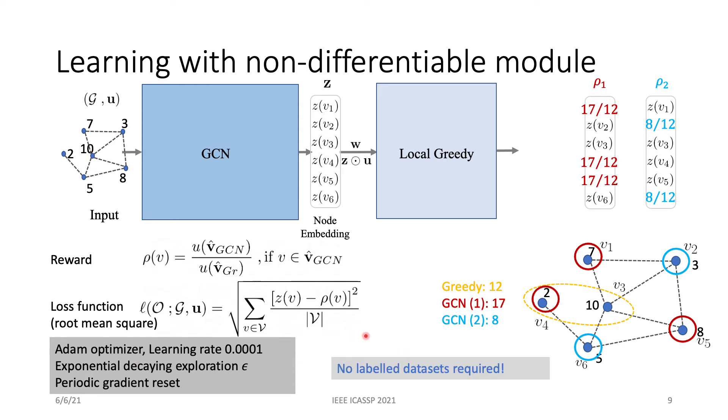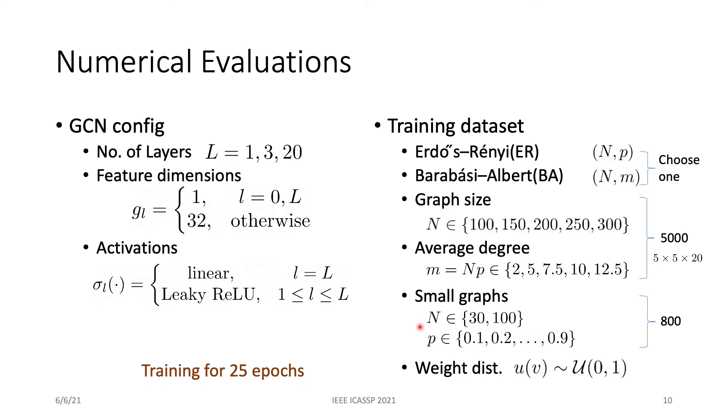The advantage of this approach is that it does not require labeled datasets. Therefore, we don't have to find the exact solution of an NP-hard problem. Next, I will introduce our numerical results. Here are the configurations of GCNs and training dataset. Notice that the training is pretty lightweight, with a training dataset of only 5,800 graphs and 25 epochs.